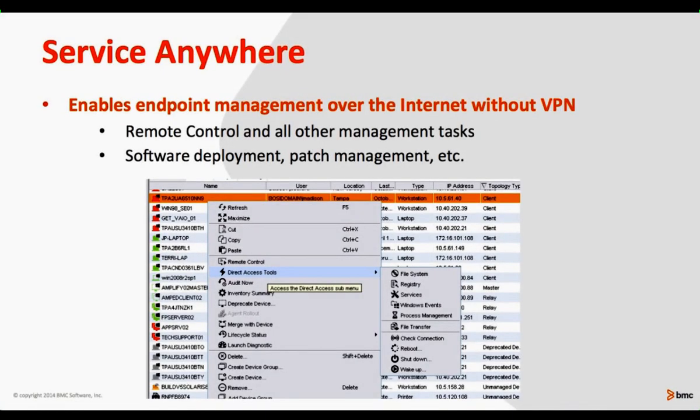As long as endpoints are connected to the internet, we don't need VPN to do things like remote control, deploy software, or deploy patches. We can provide this level of support no matter where they are. This is great because if you talk to a service desk, they'll tell you that the first issue people call about is VPN. If somebody has VPN issues, they're usually not getting the management they require. We can take that VPN piece out of the puzzle and provide seamless management for these devices.